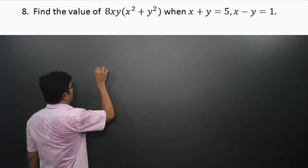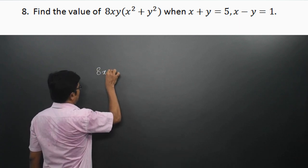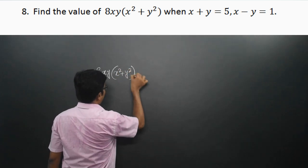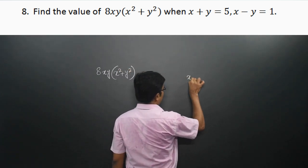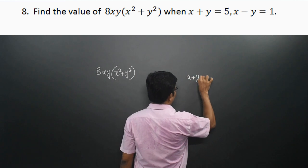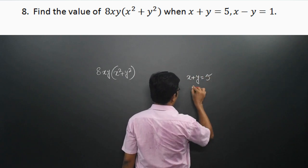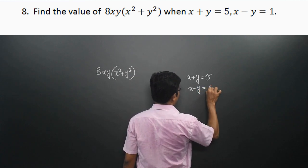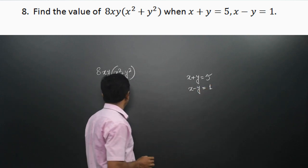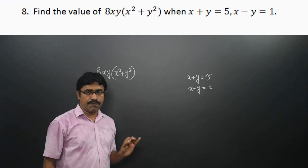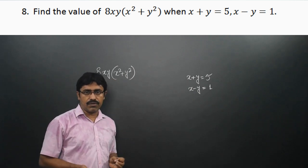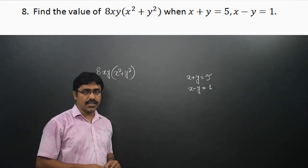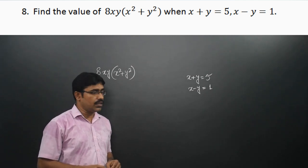We are asked to find the value of 8xy(x² + y²), when x + y = 5 and x − y = 1. The value of 8xy(x² + y²) can be calculated in two ways: one is using identities, the other is without using identities.